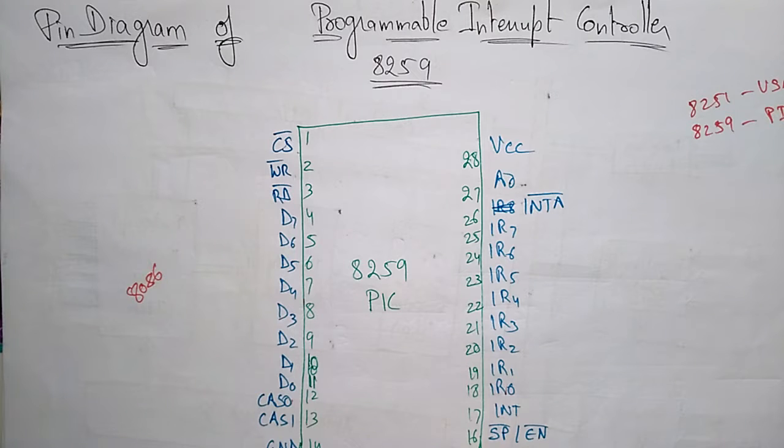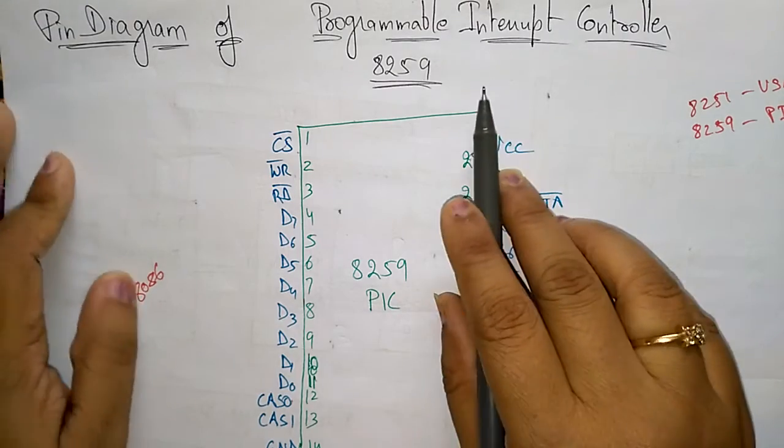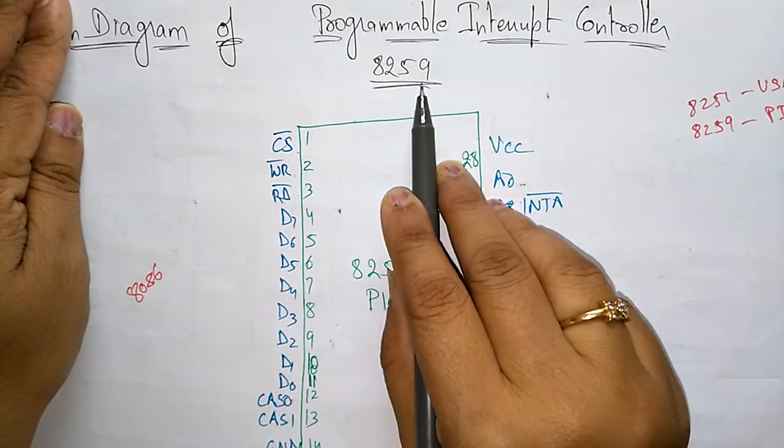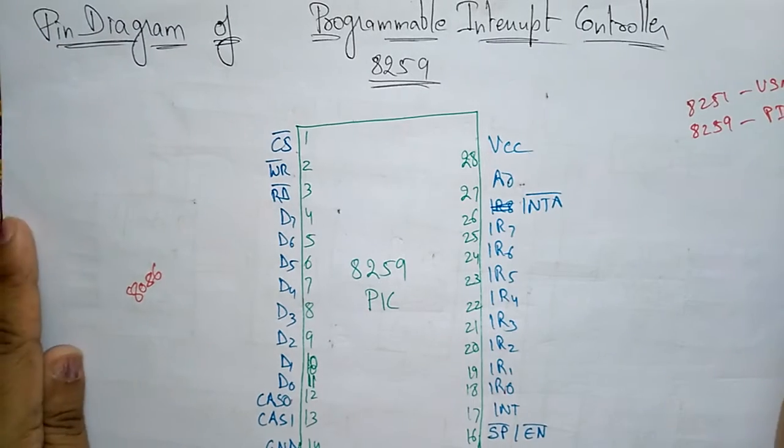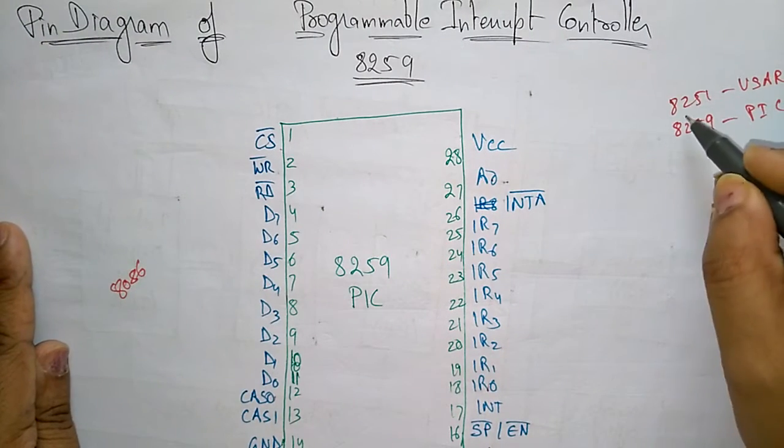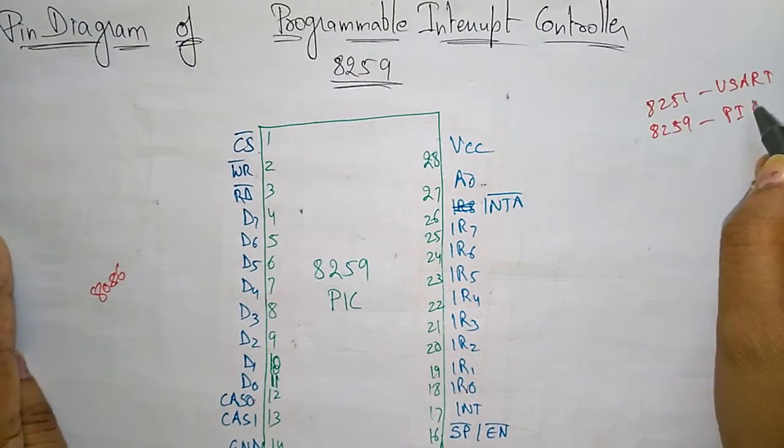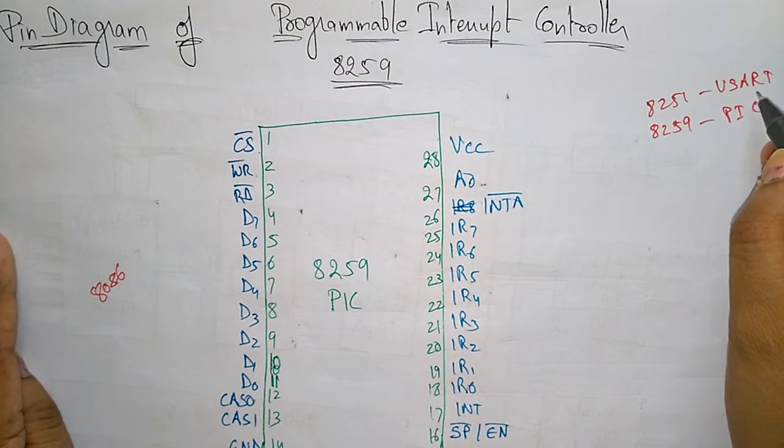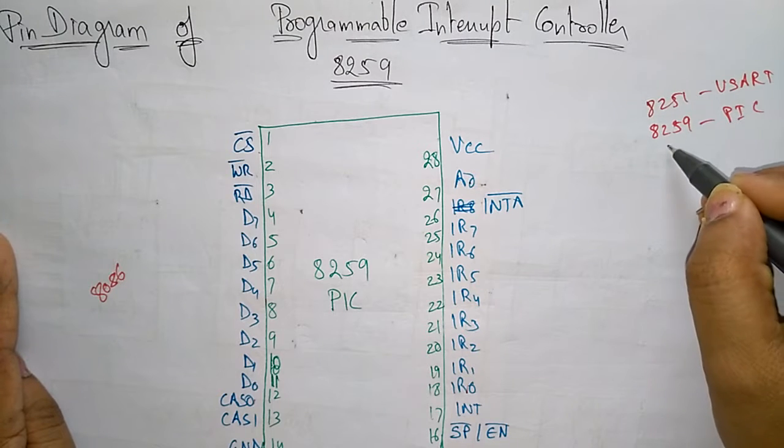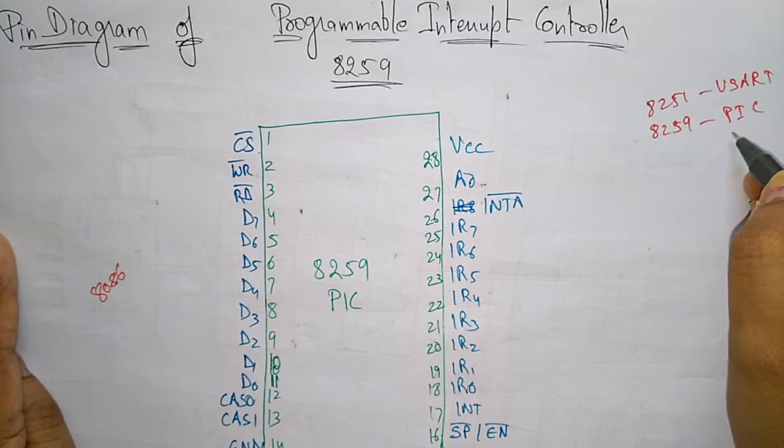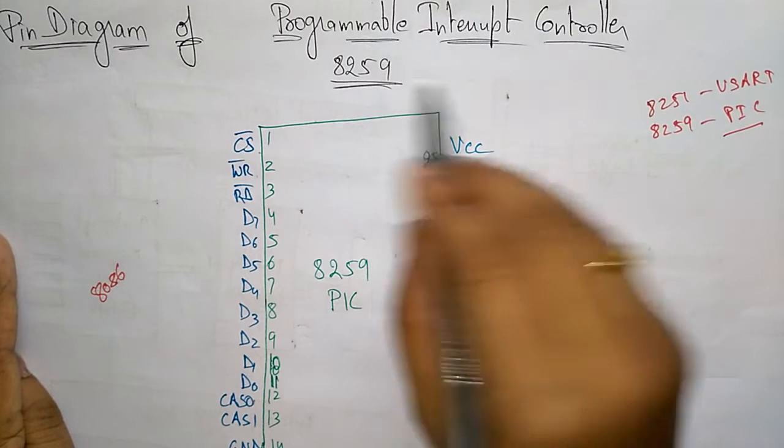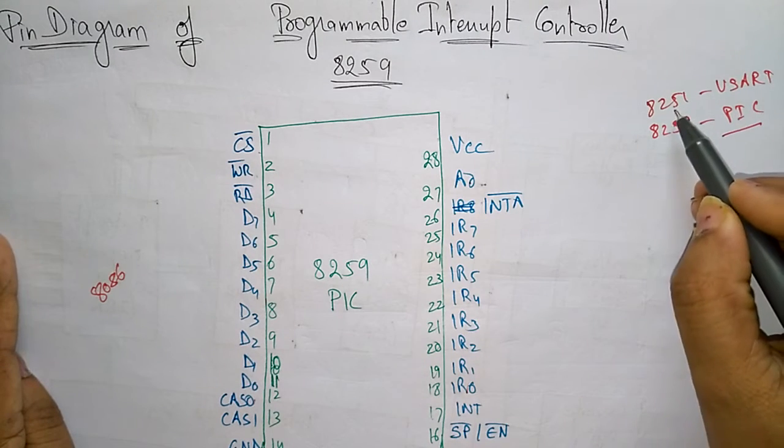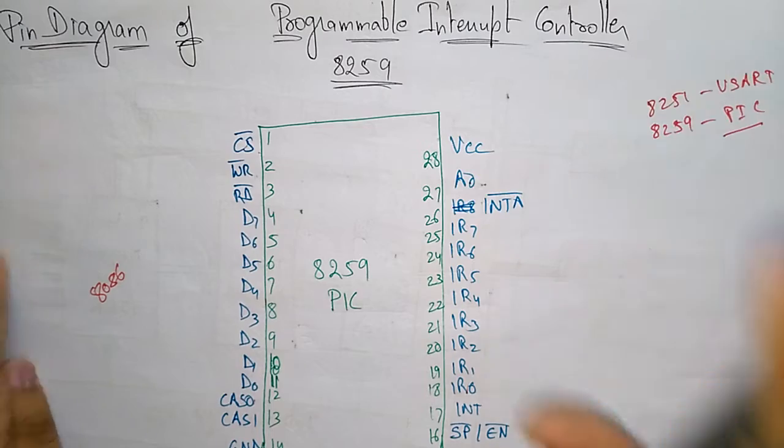Hi students, coming to the next topic in microprocessor unit: programmable interrupt controller. The pin number is 8259. In the previous video I explained about 8251, which is USART - Universal Synchronous Asynchronous Receiver Transmitter. Whereas 8259 is PIC, programmable interrupt controller. 8259 means programmable interrupt controller, 8251 means USART. Don't be confused.